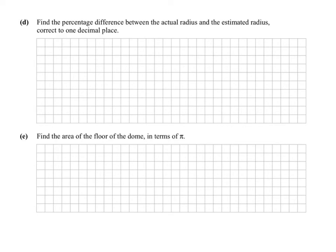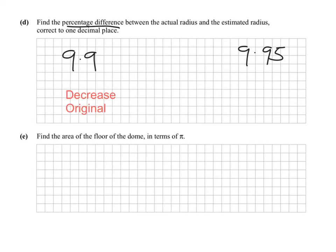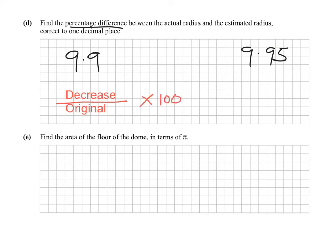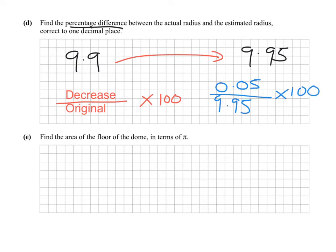Find the percentage change between the actual radius and the estimated radius. With the man we estimated the radius as roughly 9.9; from the volume calculation you should get 9.95. The percentage decrease formula is: decrease ÷ original × 100. The decrease is 0.05 and the original is 9.95. So it's 0.05/9.95 × 100 to find the percentage decrease.